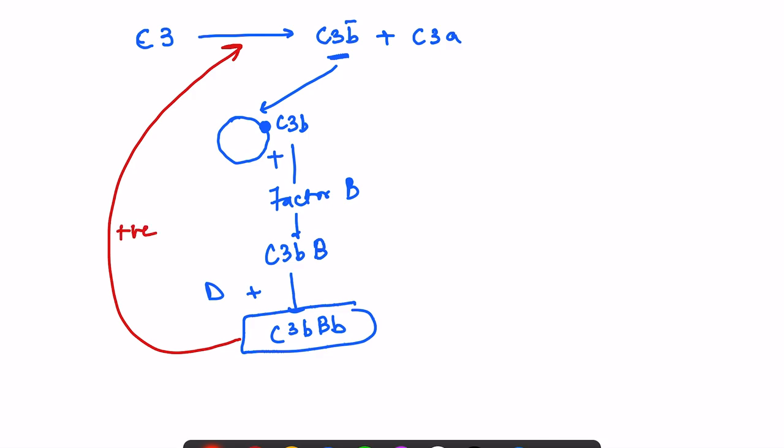So once C3B binds to the microbial surface, a huge amount of C3B keeps accumulating, more and more C3-converting enzyme is formed, and C3B also activates C5 into C5B and C5A.